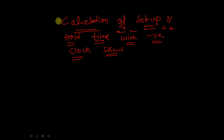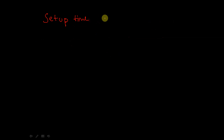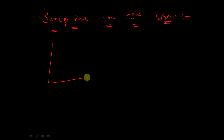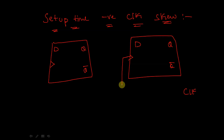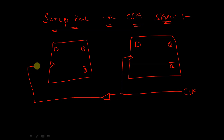We will start with the calculation of setup time by considering negative clock skew. We will take the same circuit used for previous calculations. This circuit has two D flip-flops with Q, Q-bar outputs and D inputs. In the negative skew case, the clock and data flow in different directions — the clock is given directly to the second flip-flop and reaches the first flip-flop through a combinational circuit.